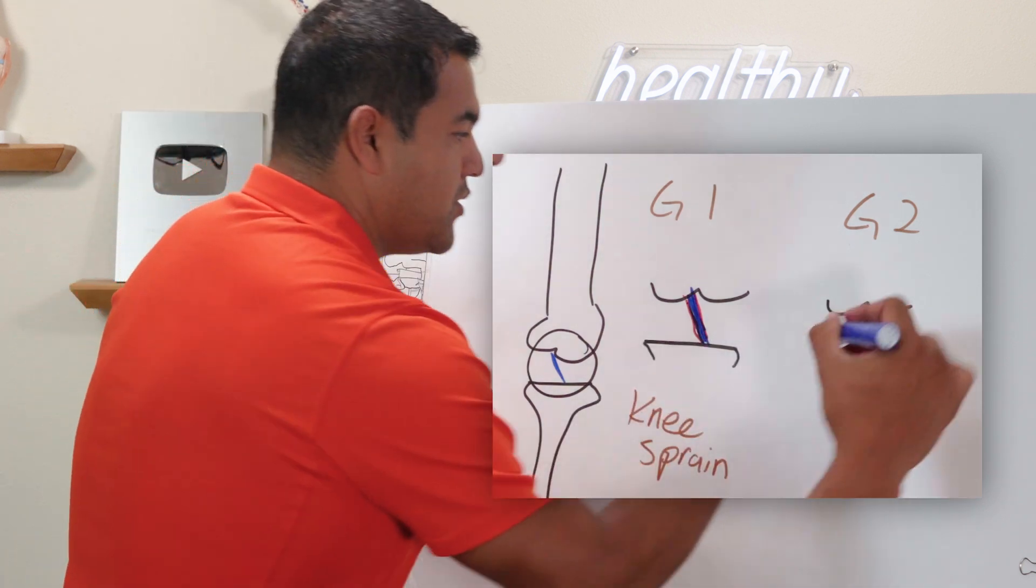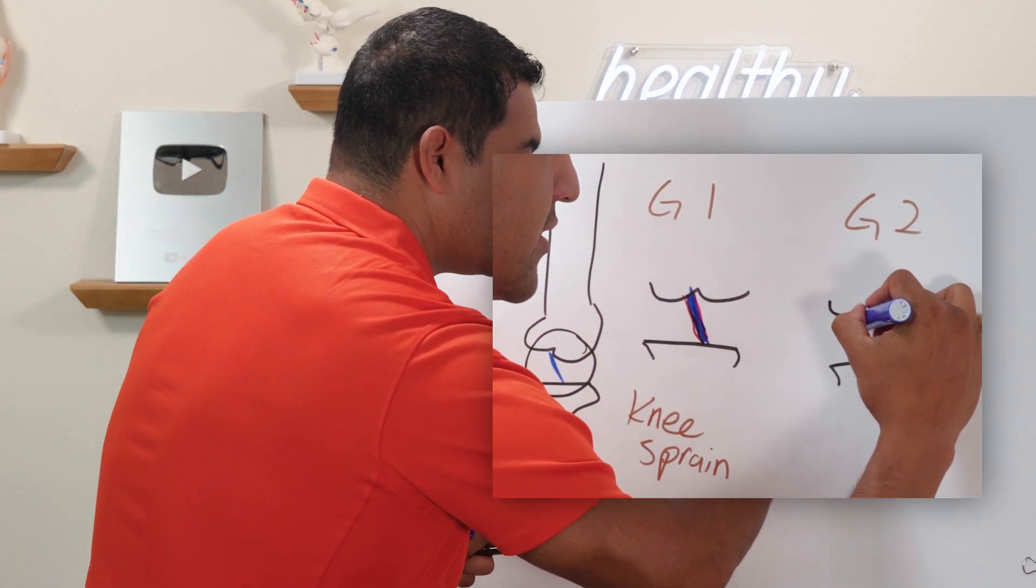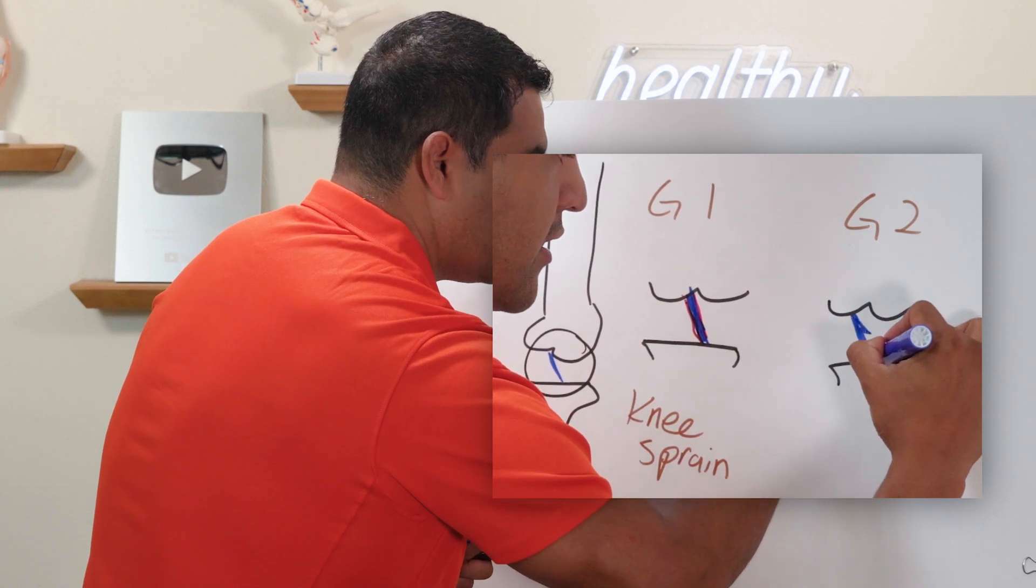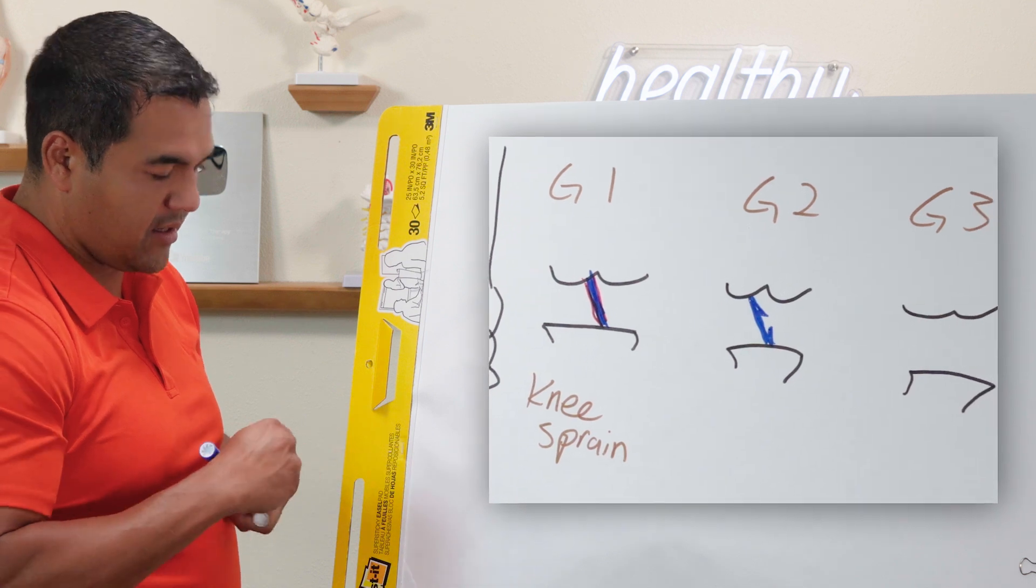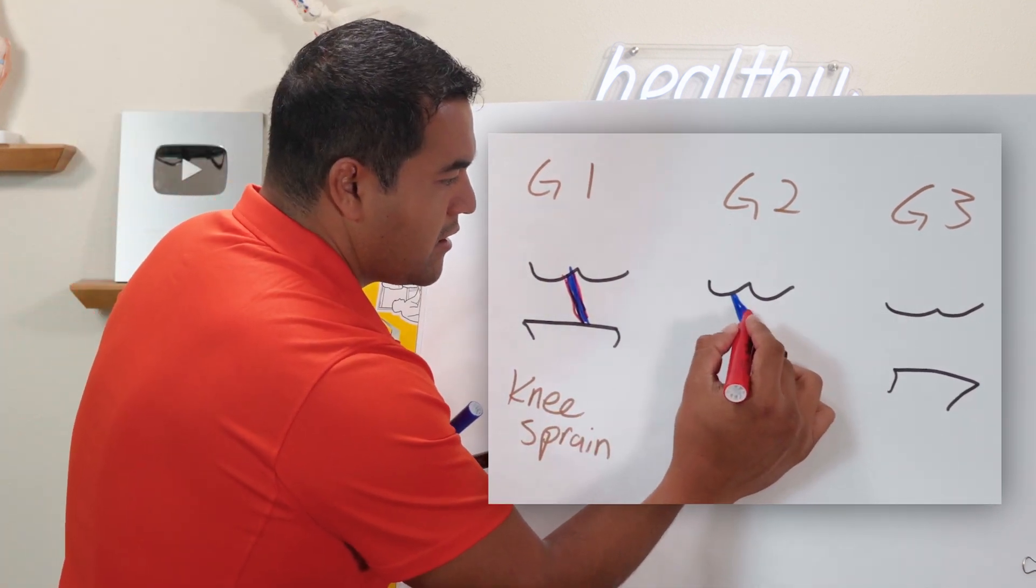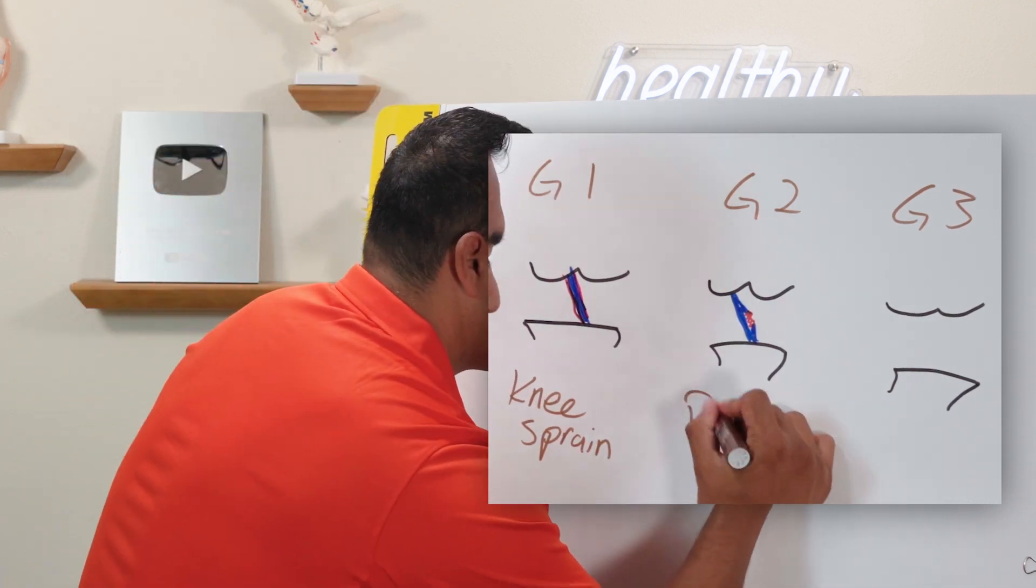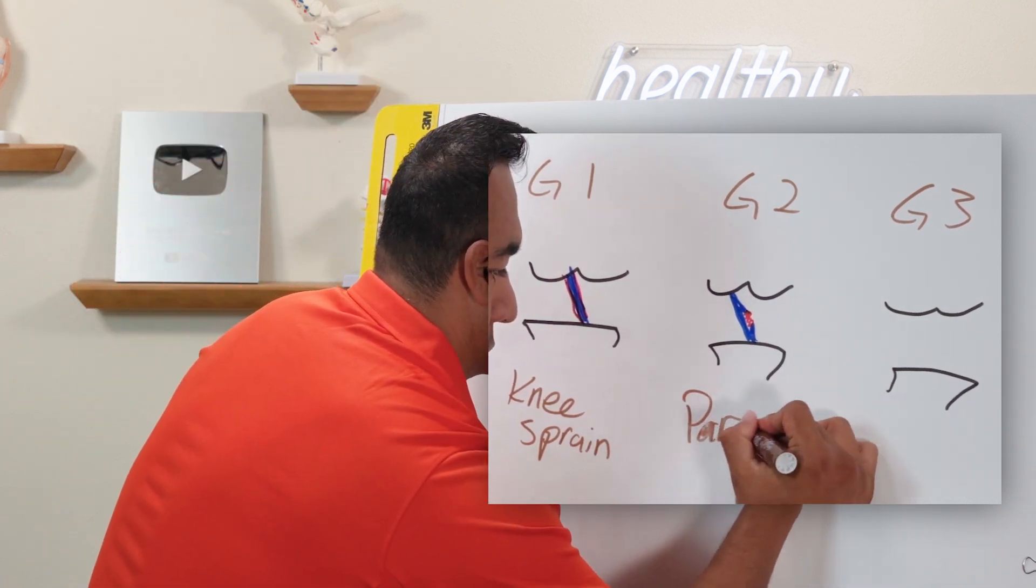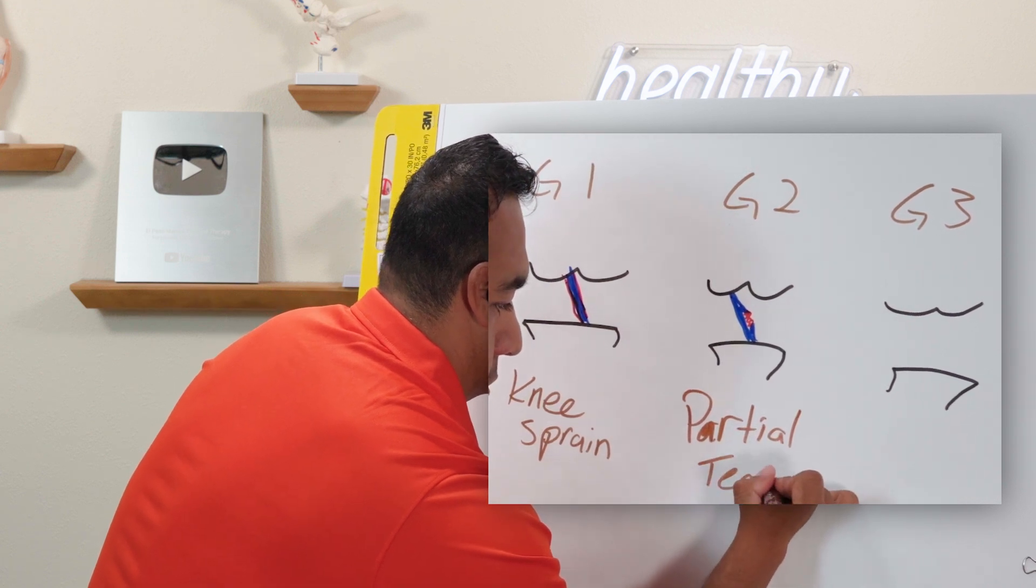In grade two you have a partial tear, so you'll have fibers that are not connected. You can see right there there's a chunk of it torn and that's where the injury is. I'm just going to color that in as red and this would be called a partial tear.